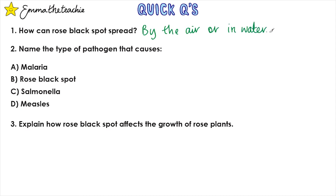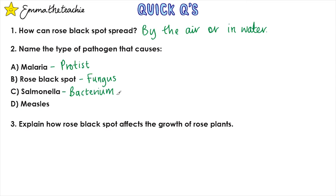Question 2: Name the type of pathogen that causes each of the following. A — Malaria: this is a protist. B — Rose black spot: this is a fungus. C — Salmonella: this is a bacterium. D — Measles: this is a virus.